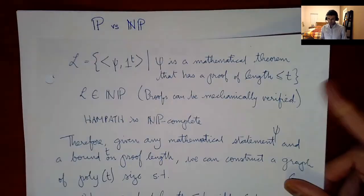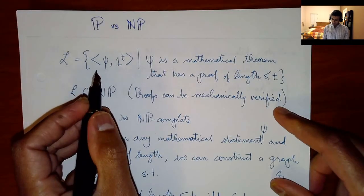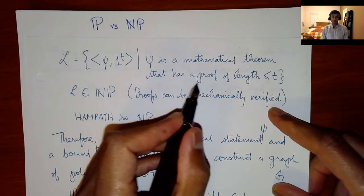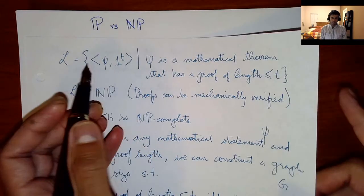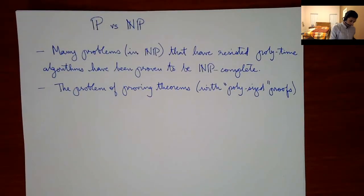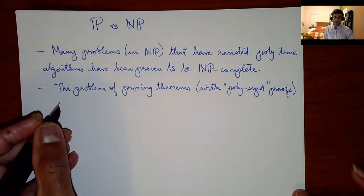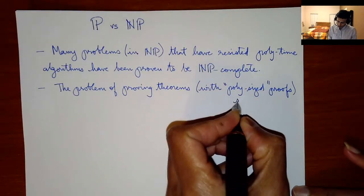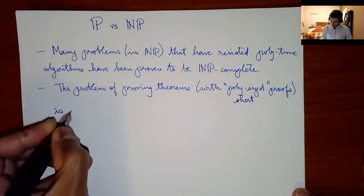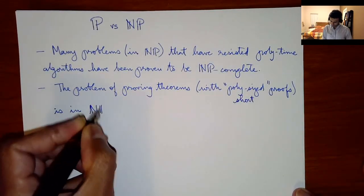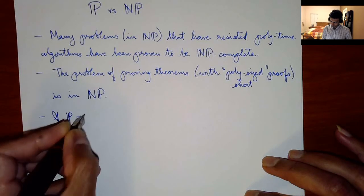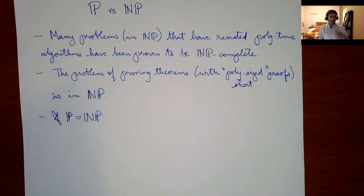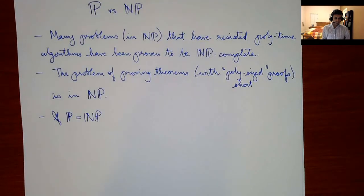Remember we talked about the language L where you have a mathematical theorem that has a proof of length less than t, and you pad the input — you give t in unary. So the problem of proving theorems with short proofs is in NP. And so a lot of this says that if P is equal to NP — now this is a bit of a vague statement — let me just put this out there.